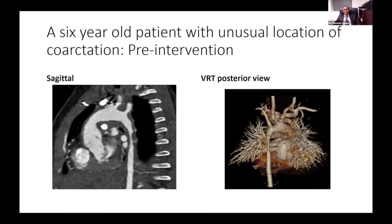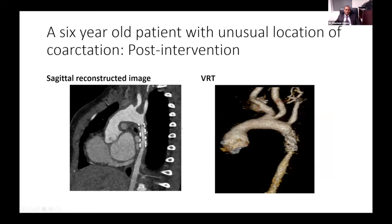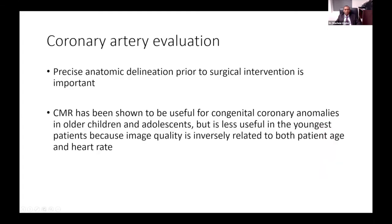This is a six-year-old patient with an unusual location of coarctation. If you are doing echo, you will see this part of the arch and may think it is normal with no coarctation, but you can see the mid-thoracic aorta is significantly hypoplastic. This is pre-op imaging, and after intervention with stent deployment you can still see some narrowing distal to the stent. CT scan shows that if you do MRI, there will be significant metallic artifact from the stent.